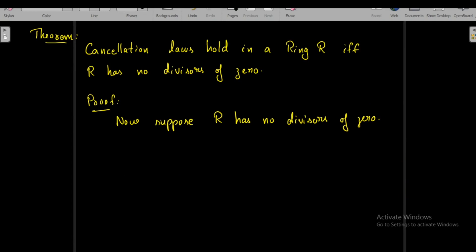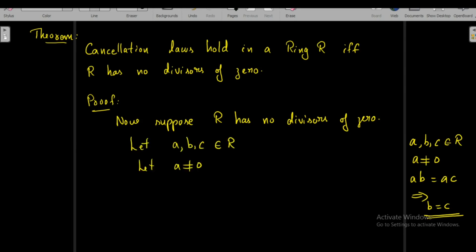Now we prove the reverse part: suppose R has no divisors of zero, and we have to show that cancellation laws hold in R. To prove the left cancellation law, we take three elements A, B, C in R and assume A ≠ 0 and AB = AC, and show this implies B = C.